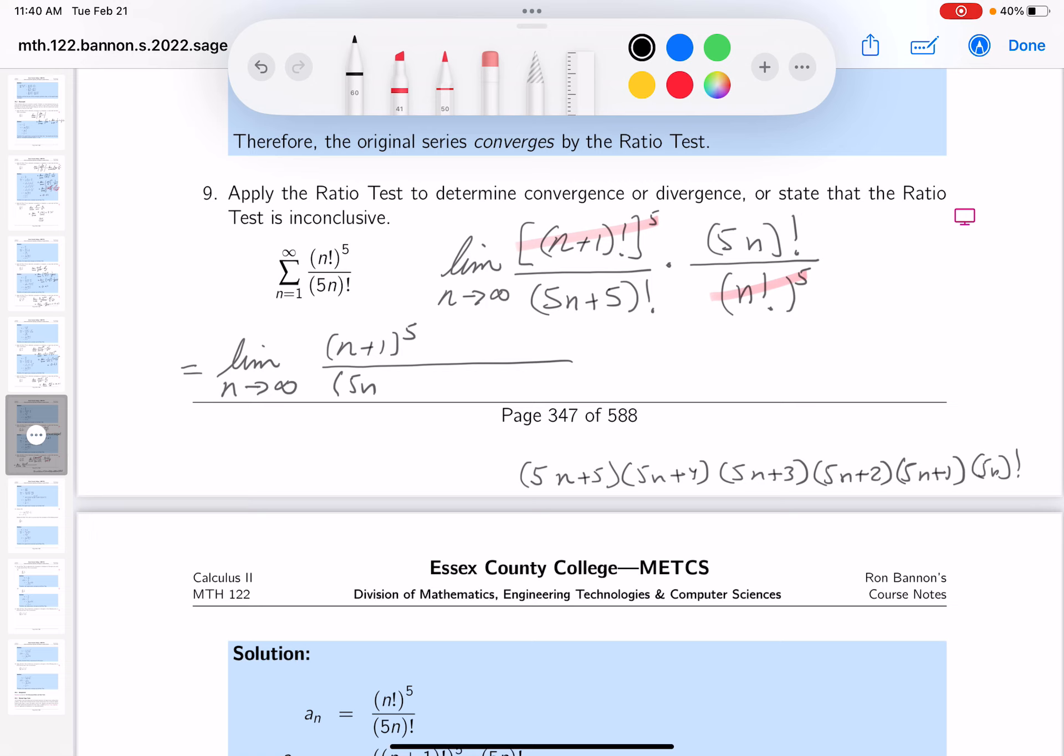Now it cancels off. So let's write that down. So what do you get? 5n+5, 5n+4, 5n+3, 5n+2, and 5n+1.